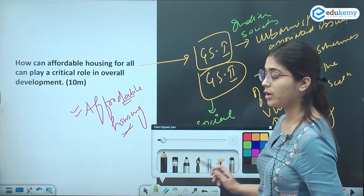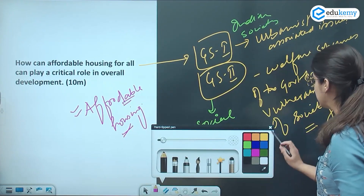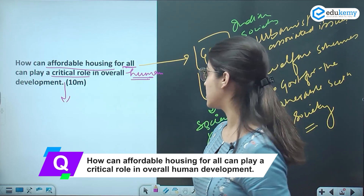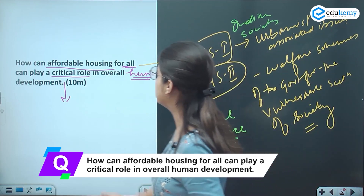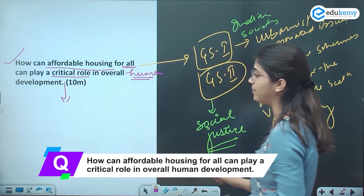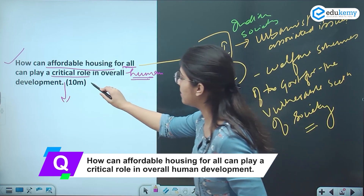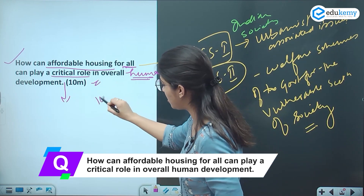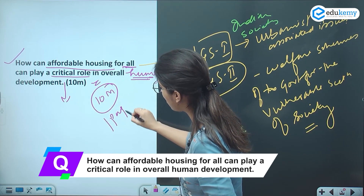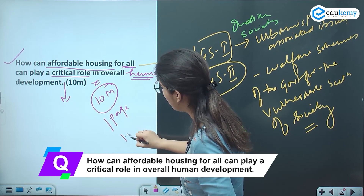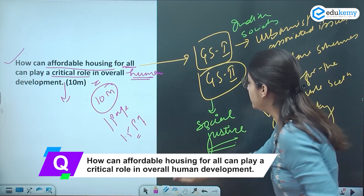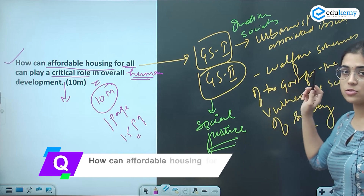We are going to discuss this question: how can affordable housing for all play a critical role in overall human development? This is a 10-marks question, so you are not going to cross one to one-and-a-half pages in your answer.